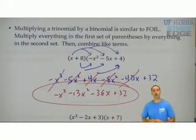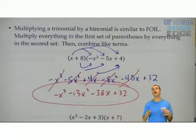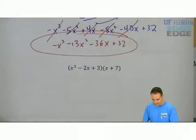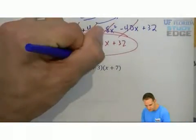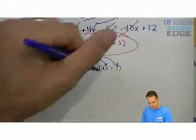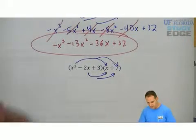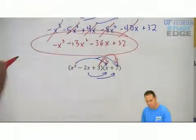So after you go ahead and multiply, you have to combine like terms. Let's do it again. In this case, I'd multiply x cubed times each. Then I'd multiply negative 2x times each. And then I'd multiply 3 times each term in the other set of parentheses.